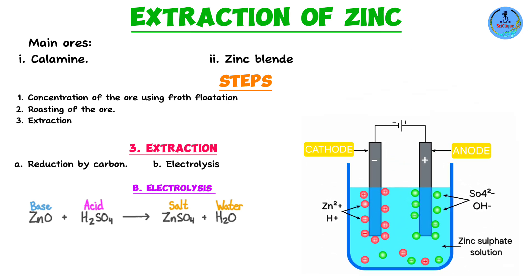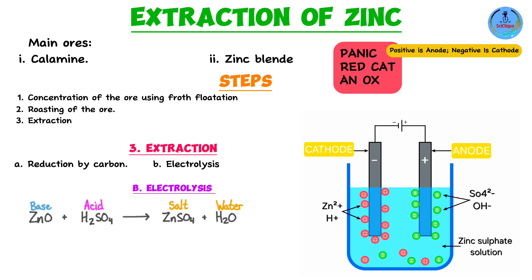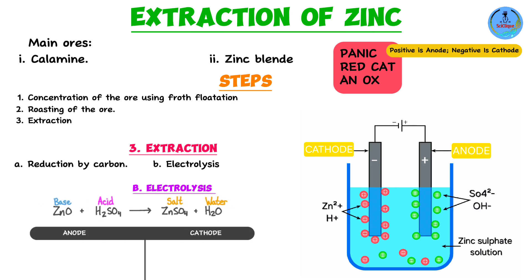In the electrolytic setup we have two electrodes: the anode and the cathode. Three useful mnemonics: 'PaNIC' — Positive is Anode, Negative Is Cathode; 'RedCat' — reduction at cathode; 'OxAn' — oxidation at anode. The positive anode attracts negatively charged ions: hydroxide ions (OH⁻) and sulfate ions (SO₄²⁻). The negative cathode attracts positively charged ions: zinc ions (Zn²⁺) and hydrogen ions (H⁺), which come from the water used to dissolve zinc sulfate.